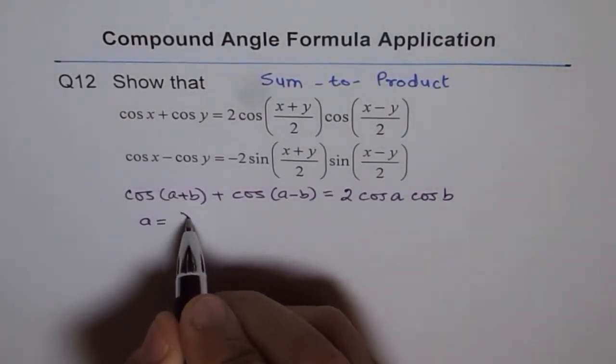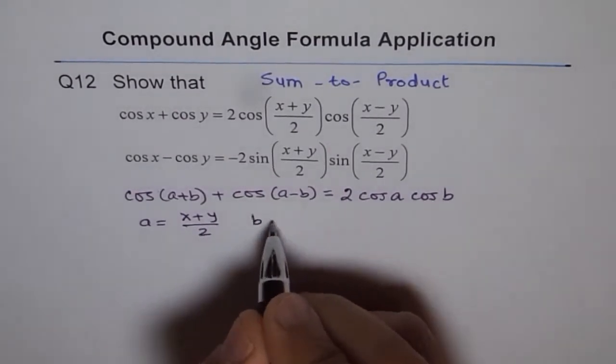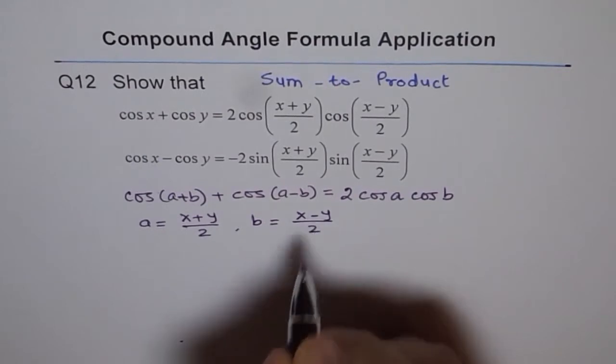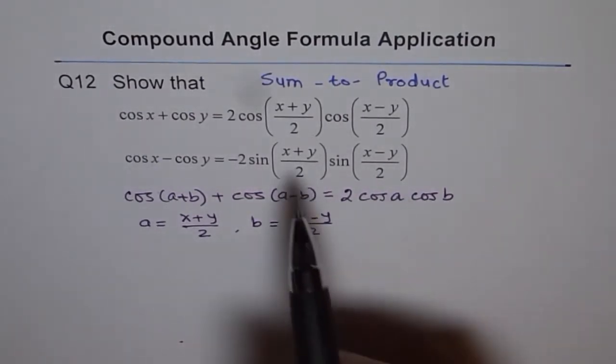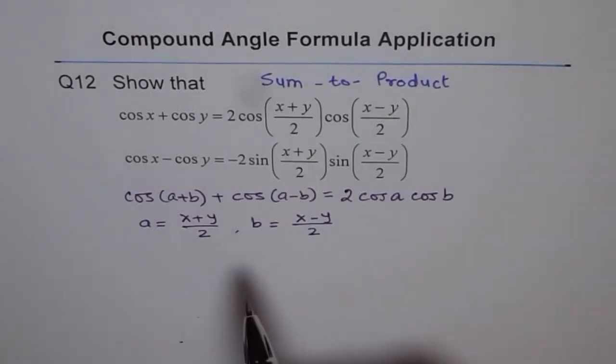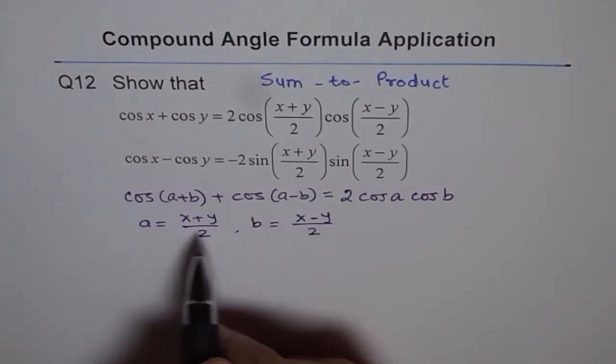So if we do that, we get, let's say, a equals to x plus y by 2 and let's say, b equals to x minus y by 2. So in that case, we do get two cos a cos b. Well, that's fine. But what happens? a plus b is what?